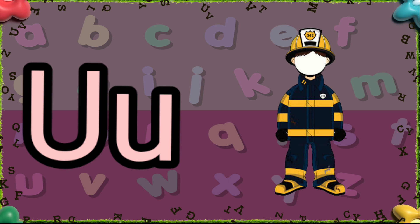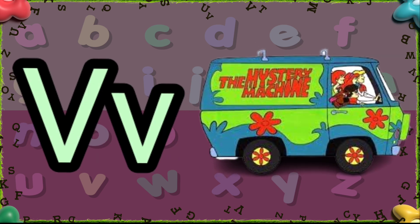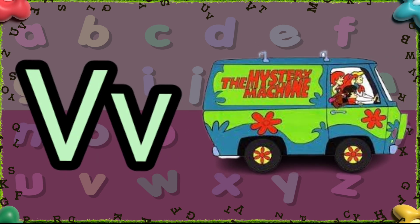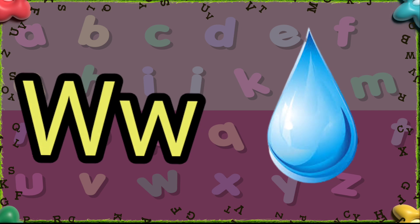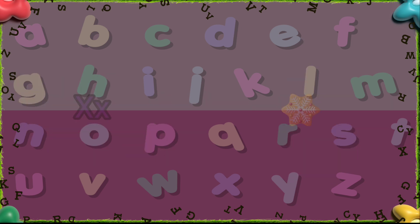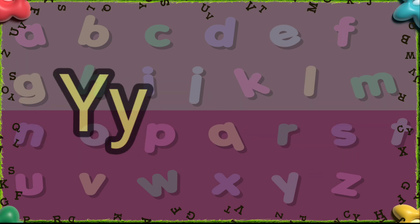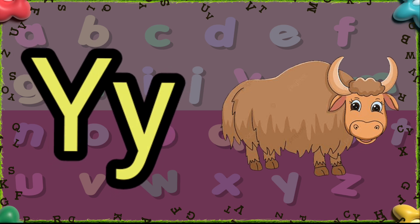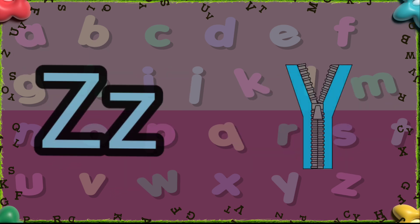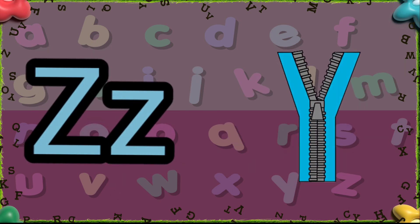U is for Uniform. V is for Van. W is for Water. X is for X-Lex Cookies. Y is for Yuck. Z is for Zip.